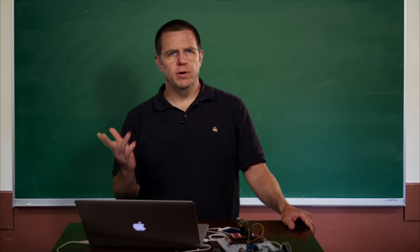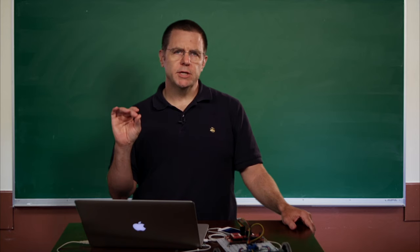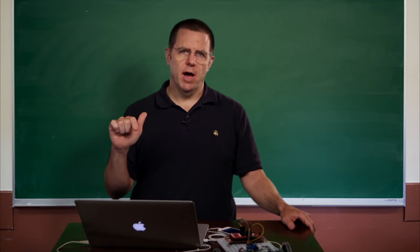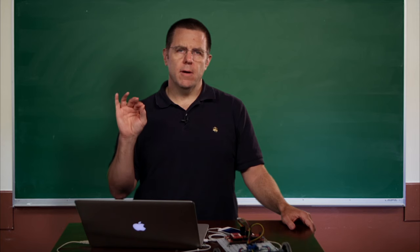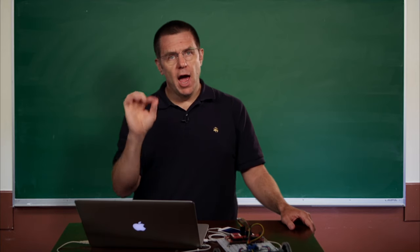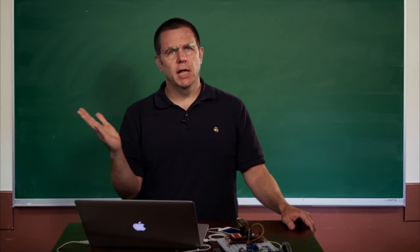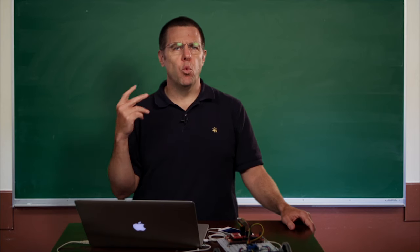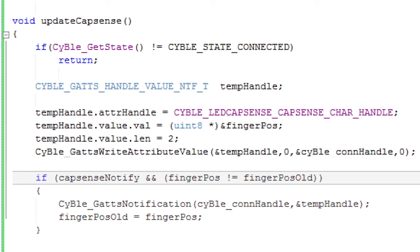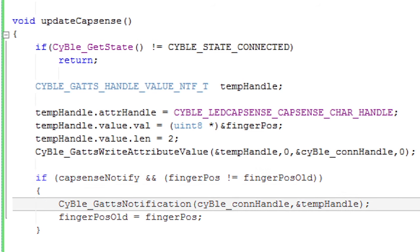The difference in this function and the previous function is — remember when we set up the component, specifically when we set up the CapSense, we clicked on the Notify button. Notify is a feature of BLE where the other side — the phone side — can say every time you get a change in the value, I'd like to know about it. So it can register for notifications of changes in value. I have a global variable called CapSense Notify, which gets set when the client characteristic configuration descriptor gets set. If it's set and the CapSense has changed, then I'll send out a notification.